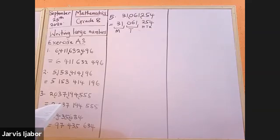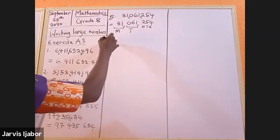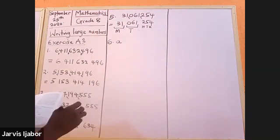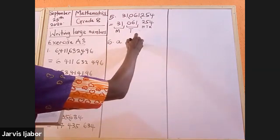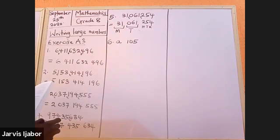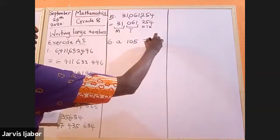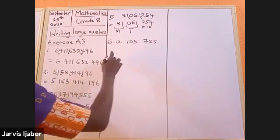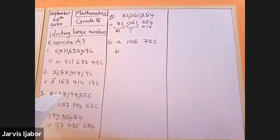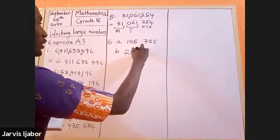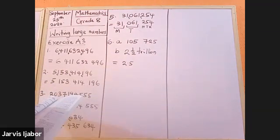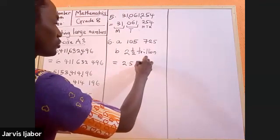That's number five. Number six says: express these numbers using the grouping of figures. A: one hundred and five thousand, seven hundred and twenty-five. B: two and a half trillion, which would be two point five trillion. Half is zero point five, so that would be two and a half or two point five trillion.